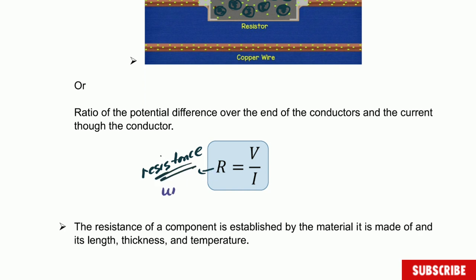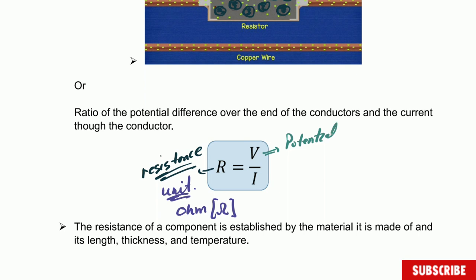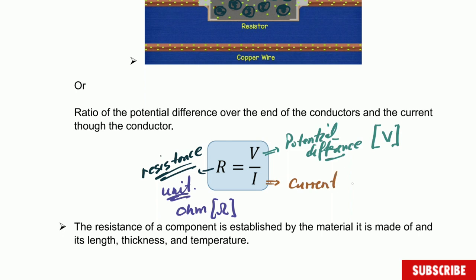The unit of resistance is the ohm, and the symbol for ohm is the Greek letter omega (Ω). V is potential difference, which we just spoke about. I is current — the unit of current is the ampere. This is the definition of resistance given as a formula: R = V/I.